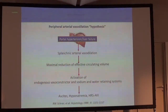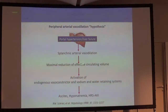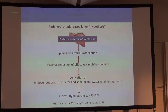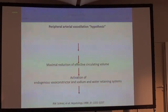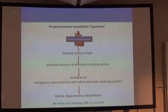Why is there an increased secretion of vasopressin in patients with decompensated cirrhosis? Because there is a reduction of the effective circulating volume due to splanchnic arterial vasodilation, which is the direct consequence of portal hypertension and liver failure. In heart failure, it is quite the same — the difference is the driving factor, which is reduced cardiac output.